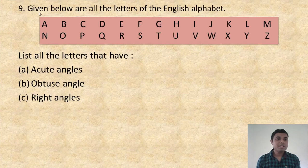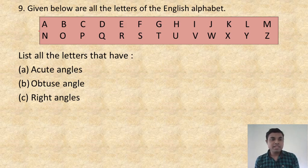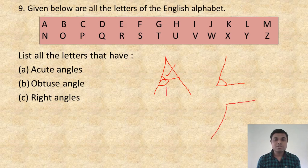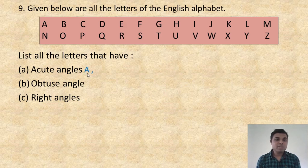Question number 9: given below are all the letters of the English alphabet — list the letters that have acute angles, obtuse angles, or right angles. For A: this side of A has an acute angle, but in the middle portion it looks obtuse. So write A under both acute angle and obtuse angle. For B, C, D — there is no angle found.